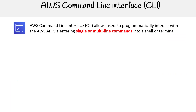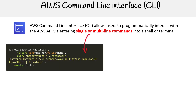So what is the AWS command line interface? It allows users to programmatically interact with the AWS API by entering single or multi-line commands into a shell or a terminal. Here is an example of a command being entered into the AWS CLI. If you look closely, the part where it says AWS — that is the command line interface, that's the CLI — and then it's followed up with commands, then sub-commands, and then it has parameters.